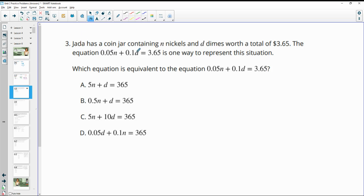Number 3, Jada has a coin jar containing nickels and dimes worth a total of $3.65. The equation 0.05N plus 0.1D equals 3.65 is one way to represent this situation. Which equation below is also equivalent to this? So in this case, it looks like we changed the nickels from like pennies or dollars, portions of a dollar, 5 cents. We write as 0.05 to actually just saying 5. So 5 cents per nickel.